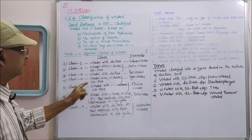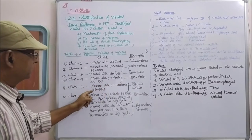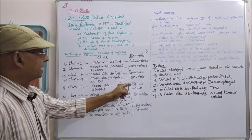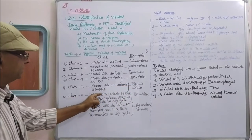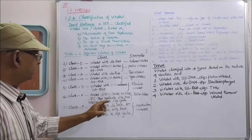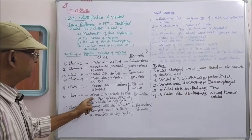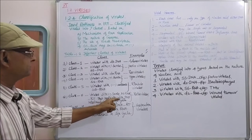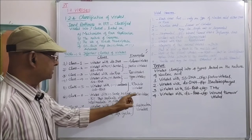Class five: viruses with minus antisense single-stranded RNA. Example: rhabdoviruses. Class six: viruses with plus-sense single-stranded RNA that replicate with a DNA intermediate in the life cycle using the reverse transcriptase (RT) enzyme. Example: retroviruses.